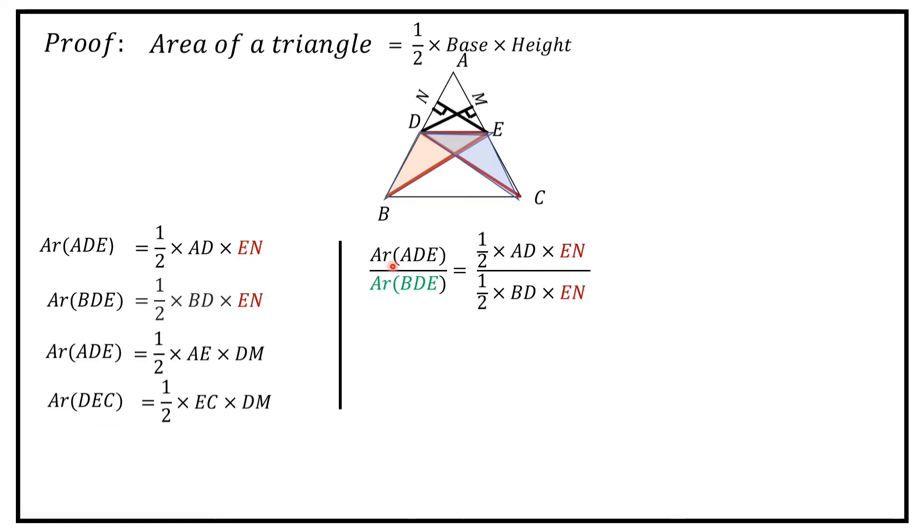Now, area of triangle ADE upon area of triangle BDE is equal to, substitute the values. Here, half and half get cancelled and EN and EN get cancelled. So that is equal to AD by BD. Let this be equation number 1.